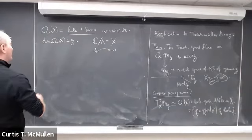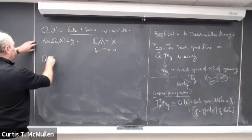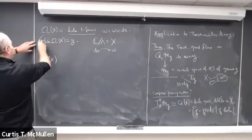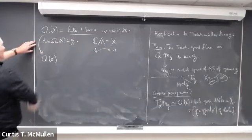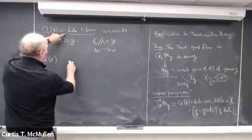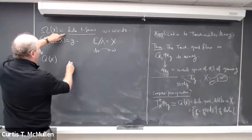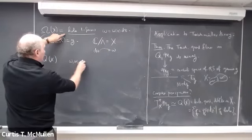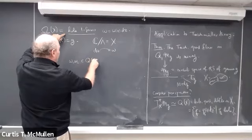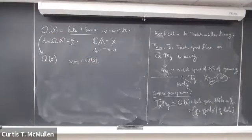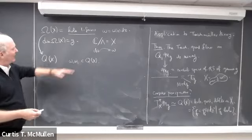Some quadratic differentials come from holomorphic one-forms: if you take a holomorphic one-form and square it, or multiply two of them ω₁·ω₂, you get a quadratic differential. For high genus not all quadratic differentials arise this way.